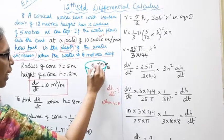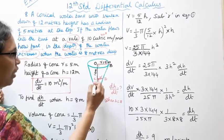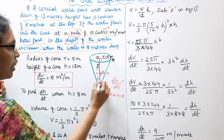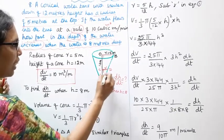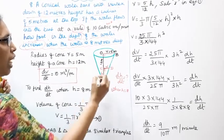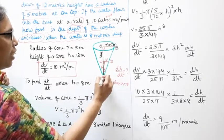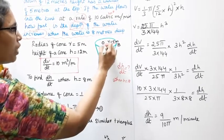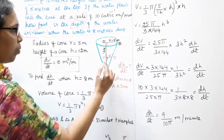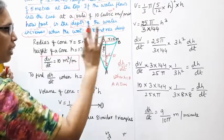We use a right angle triangle argument. Triangle AOB and triangle ACD share the same angle theta and both have right angles — angle ACD is 90 degrees and angle AOB is 90 degrees. By the AA similarity theorem, triangles ACD and AOB are similar triangles.